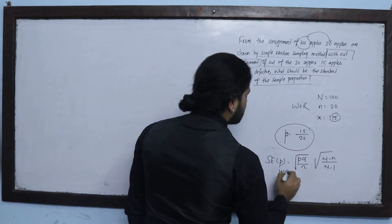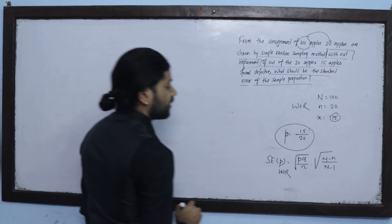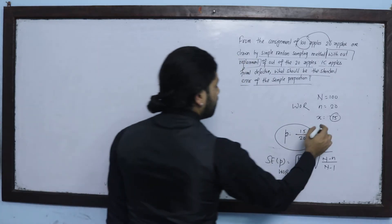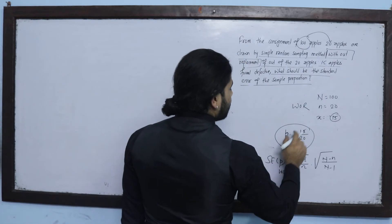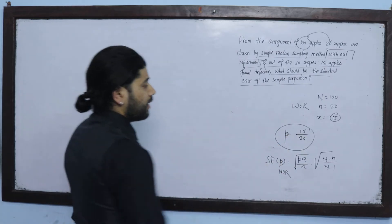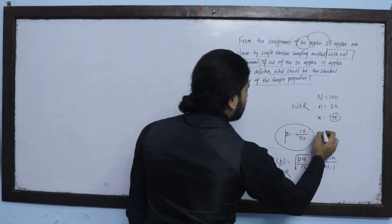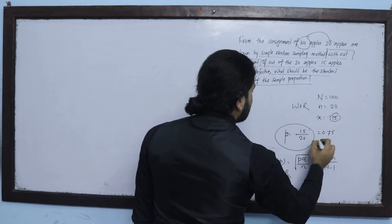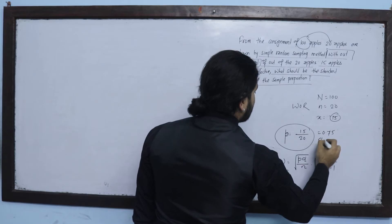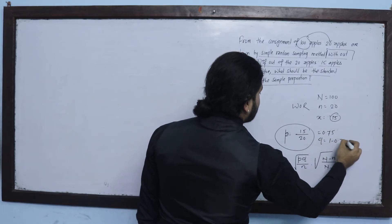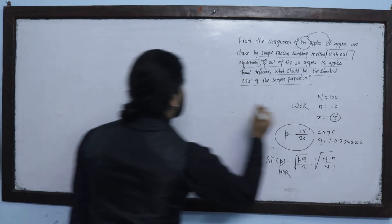We are going to replace the value of p: small p equals 15 upon 20, which is 0.75, and q equals 1 minus 0.75, which is 0.25.